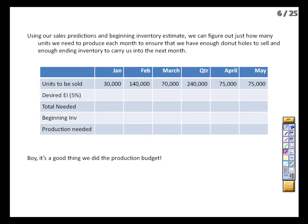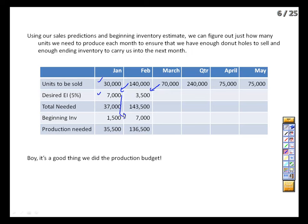In January we're going to sell 30,000 units, and we want 5% of February's 140,000 units — that's 7,000 units — as ending inventory, since that's when the media blitz starts. We need 37,000 donut holes available during January: the 30,000 to sell plus 7,000 ending inventory. We start the month with 1,500 units on hand, so we need to produce 35,500 donut holes in January. Carrying forward: 5% of February's 70,000-unit March sales gives 3,500 ending units, meaning we need 143,500 available in February but start with 7,000, so production is 136,500.